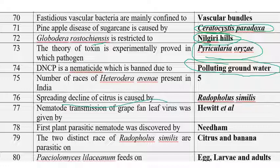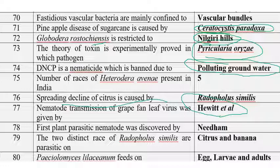Nematode transmission of grape fanleaf virus was demonstrated by Hewitt et al. The vector is Xiphinema index. The first plant parasitic nematode was discovered by Needham — Anguina tritici — in the year 1743.